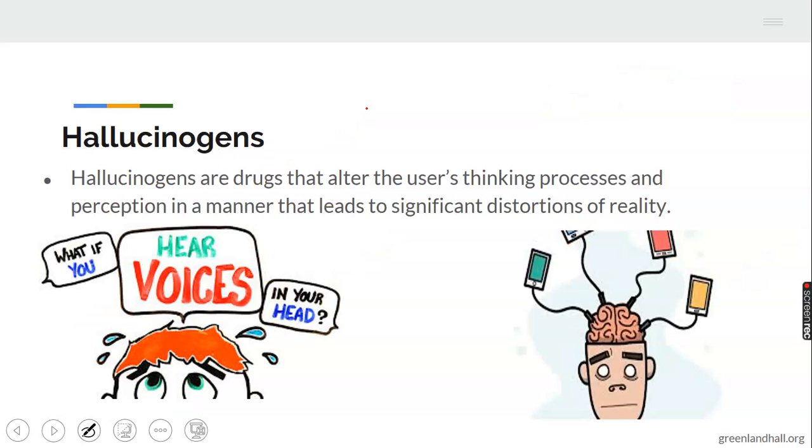Hallucinogens are drugs that alter the user's thinking process and perception in a manner that leads to significant distortion of reality. This one just alters your thinking process. Have you heard of hallucination? You don't even know what you're thinking about. You're thinking abstract things that are out of the world. Just imagine, you are no longer here with us, you have missed out on reality.